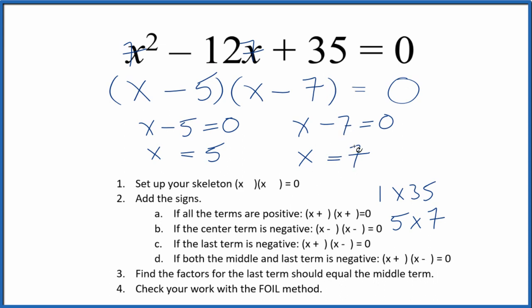If you use the quadratic equation, you'll get these same numbers. This is Dr. B factoring the equation x squared minus 12x plus 35 equals 0. Thanks for watching.